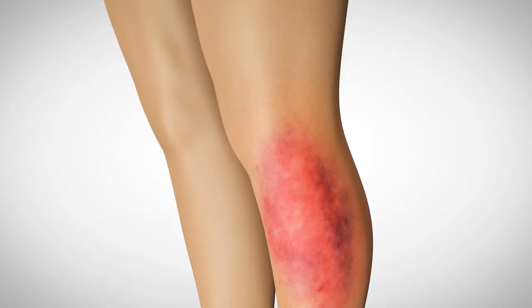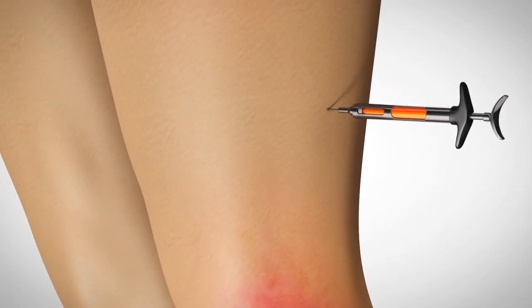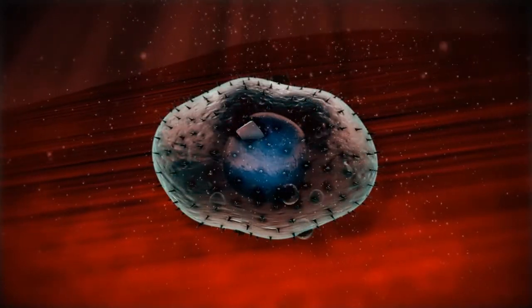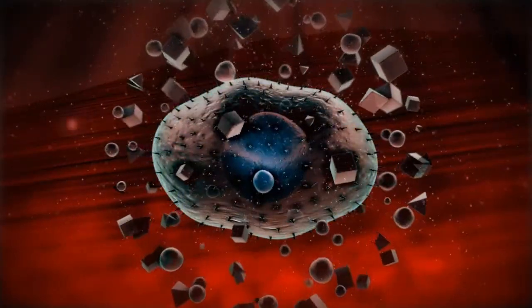PLX cells act by secreting therapeutic proteins in response to signals produced by the inflamed and ischemic area in the body. By communicating with the body, PLX cells work with nature to provide blood to the body's ischemic areas.